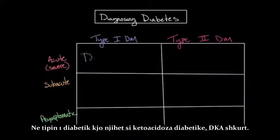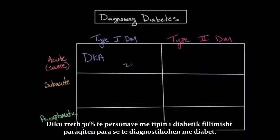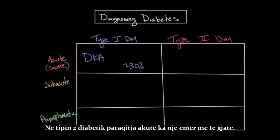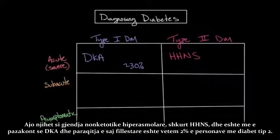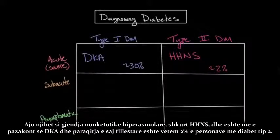In type one diabetes, this is known as diabetic ketoacidosis, or DKA, and it is how about 30% of individuals with type one diabetes will initially present before diagnosis. In type two diabetes, the acute presentation is known as hyperosmolar non-ketotic state, or HHNS, and it's much less common, being the initial presentation for only about 2% of individuals with type two diabetes.